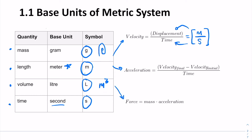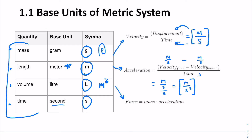Acceleration is the change in velocity over time — final velocity minus initial velocity, divided by time. We just found out that velocity is meters per second. Time we know is seconds. So meters per second minus meters per second, divided by seconds — we get meters per second divided by seconds, which becomes meters per second squared. So the units of acceleration are meters per second squared, and we can get that from our four base quantities.